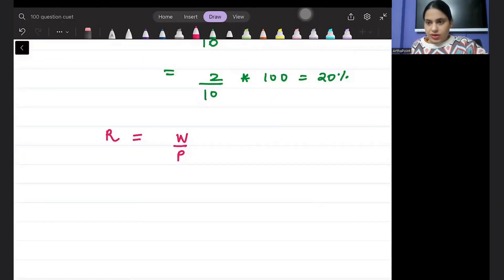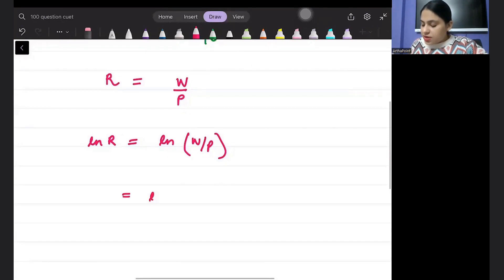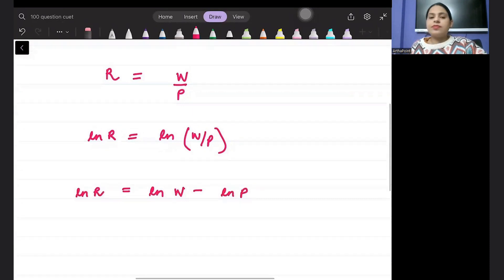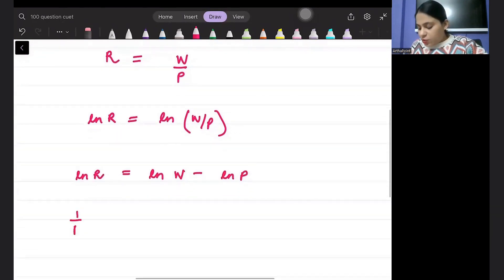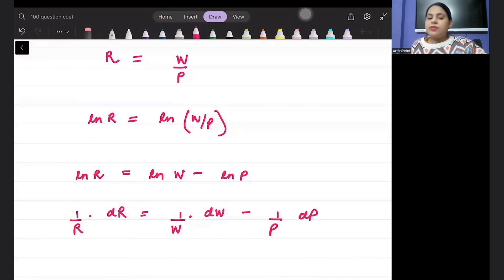Now, what I am going to go ahead and do is that I am going to take log on both side. So, LNR will be LNW by P. This can be written as LNW minus LNP. Now, I will do a full differentiation. 1 by RDR is equal to 1 by WDW minus 1 by PDP.